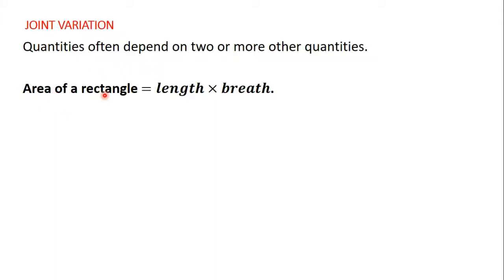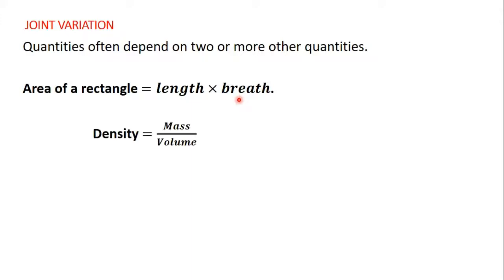For example, let's consider the formula for the area of a rectangle. From the videos on mensuration, we learned that the area of a rectangle is equal to length times breadth. Looking at this formula carefully, we can see that the area depends on both the length and the breadth. Another example is density: the density of a material is equal to the mass of the material divided by its volume, so density depends on the mass and the volume of the material.